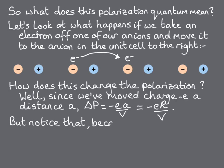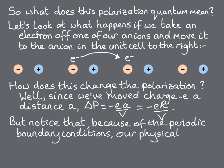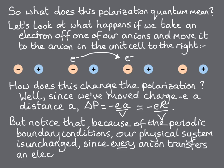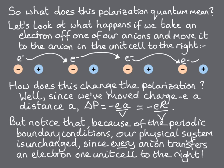But notice that moving this electron has not changed the physical system. Because of the periodic boundary conditions, when one anion transfers an electron one unit cell to the right, every other anion also transfers an electron in the same way, and so we end up back where we started.